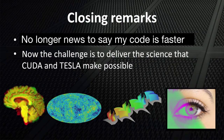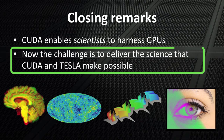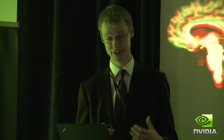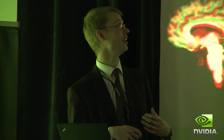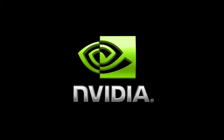On my last slide: it's no longer news to say that your code is running 10 or 20 times faster — you can't really publish that. But the reason for that is CUDA, because CUDA is enabling scientists to do that work. We're no longer talking about programmers with graphics experience working in OpenGL. CUDA is a language that scientists can get to grips with, do their own programming, and see the results. The challenge now is to deliver this new science that CUDA and Tesla make possible, and that's what we're going to continue doing at Cambridge. Thank you very much.